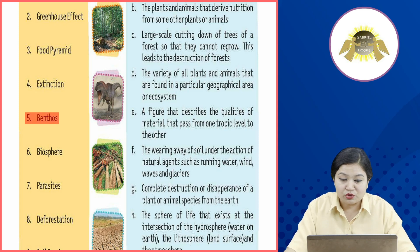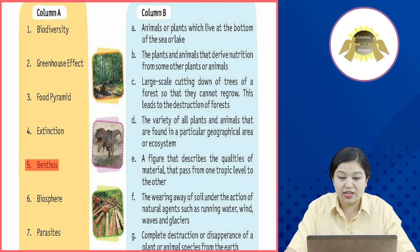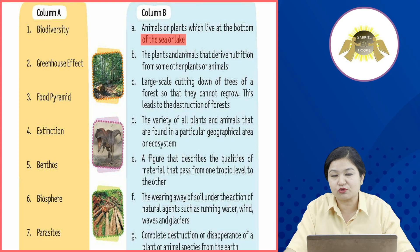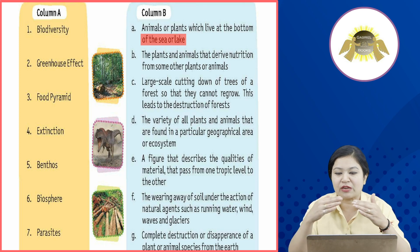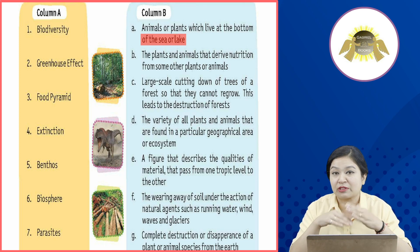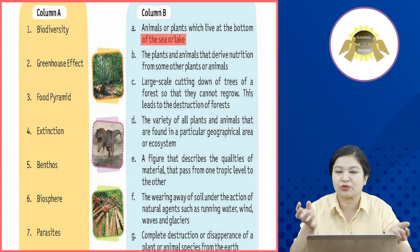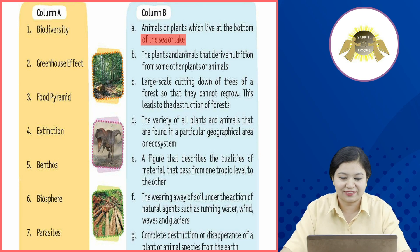5th: Benthose. Benthose किसे कहा जाता है? Benthose कहा जाता है — animals or plants which live at the bottom of the sea or lake. वो plants और animals जो sea या lake के नीचे, bottom पर रहते हैं, उन्हें हम Benthose कहते हैं।